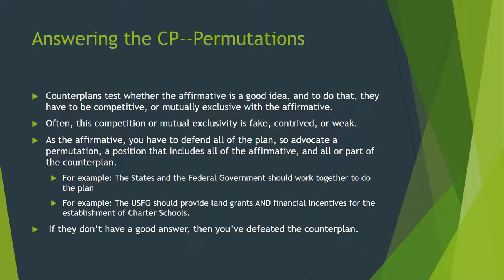Let's talk about the permutation. A counter plan is a test of whether the affirmative is a good idea, and to do that, they have to be competitive or mutually exclusive. Often, this competition is fake, contrived, or weak. As the affirmative, you have to defend all of the plan, so advocate for a permutation — a position that includes all of the affirmative and all or part of the counter plan. This is the fundamental argument: do both. For example: the 50 states and the federal government should work together to do the plan, or the 50 states should take X and Y action for the establishment of charter schools. If they don't have an answer, you have defeated the counter plan.